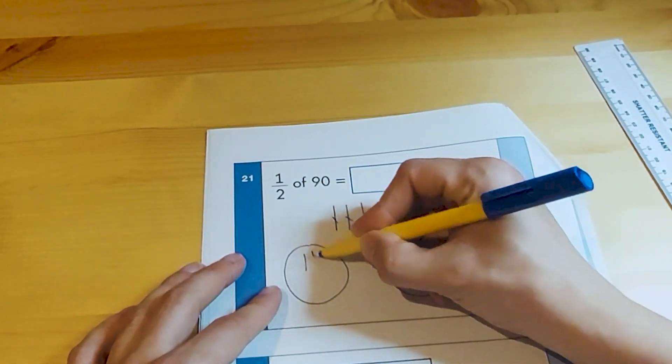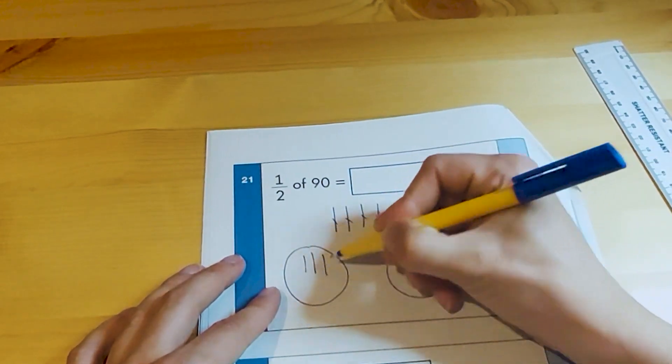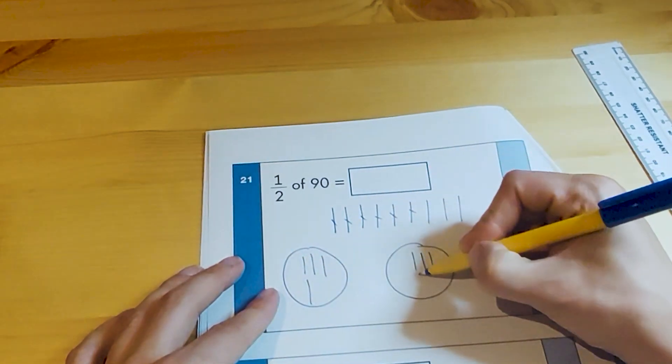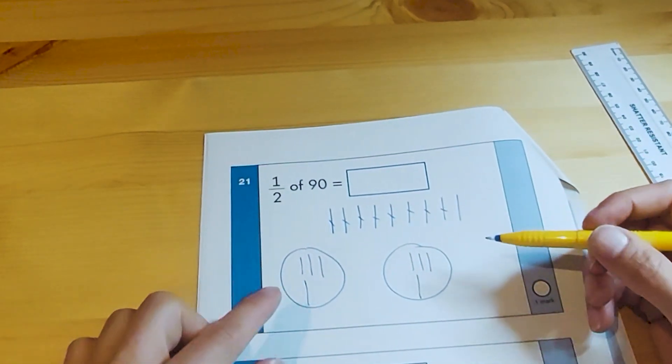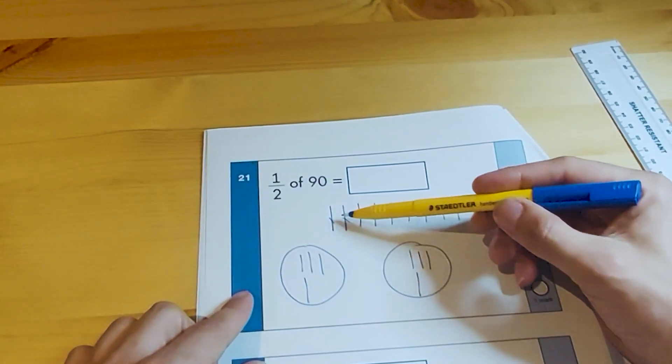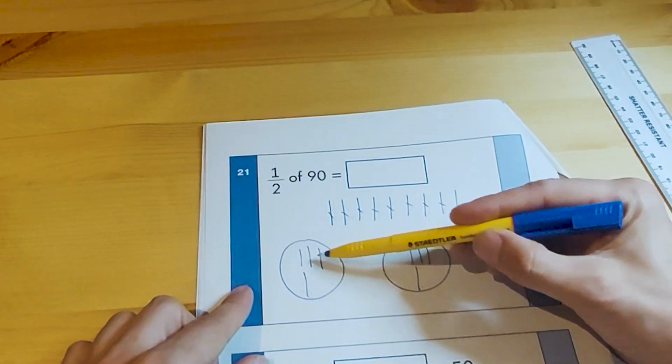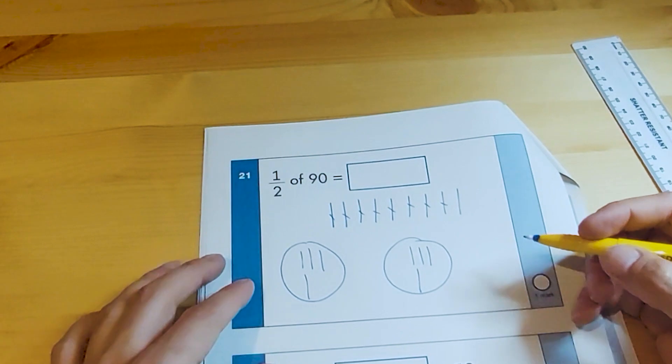But what we want to do is we need to share these out. So I'm going to share 10 over here and 10 over here and cross them out as we go. 10 over here and 10 over here, cross them out. That leaves us—we've shared out 10, 20, 30, 40, 50, 60, 70, 80. So 40 in there and 40 in there. We're left with 1 ten.